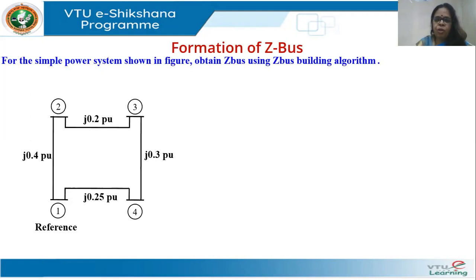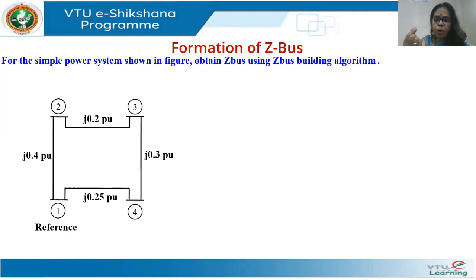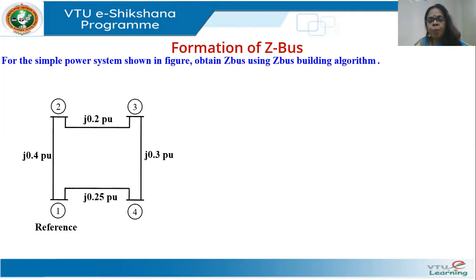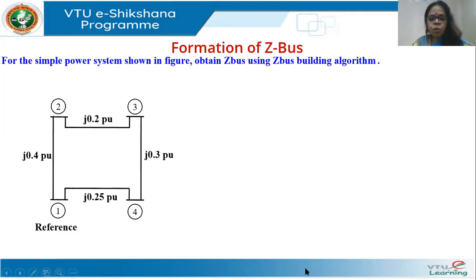You start with a null matrix — there are no elements, or you can put a zero corresponding to the reference bus. You start the building algorithm by first adding a node. Since you only have a reference node, you must add another node which has a line connected to the reference. So the Z-bus building algorithm starts with addition of a branch between the reference node and any other node. That would be the first element you add.